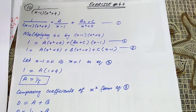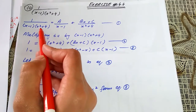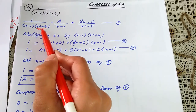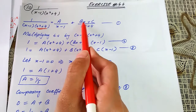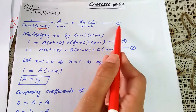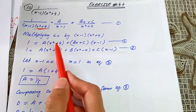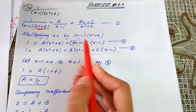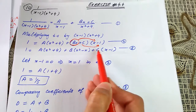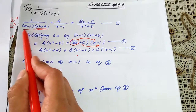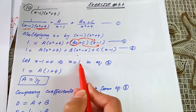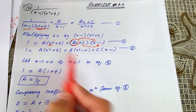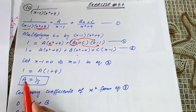Question 10: integrate 1/((x - 1)(x² + 4)). Since x² + 4 cannot be factored further, write partial fractions as a/(x - 1) + (bx + c)/(x² + 4), marking this as equation 1. Multiply both sides by the whole denominator to get: 1 = a(x² + 4) + (bx + c)(x - 1). Let x - 1 = 0, so x = 1; substituting gives 1 = a(1 + 4), so a = 1/5.